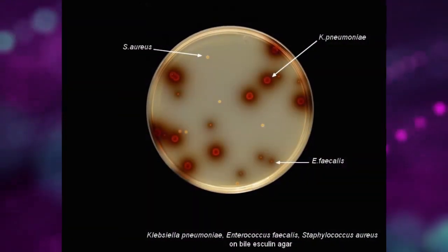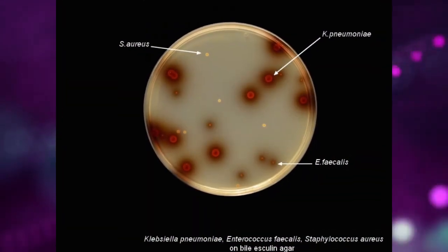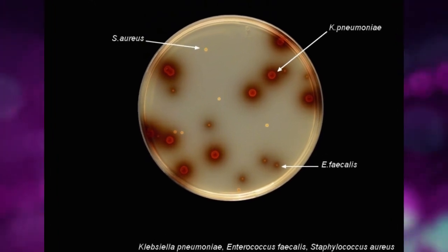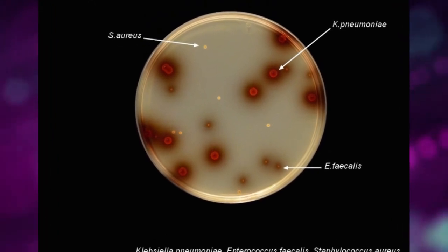On bile esculin agar, Klebsiella gives a brown precipitate around colonies.